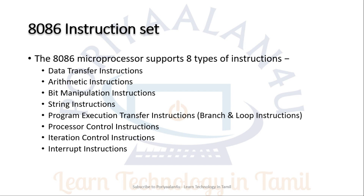These are the instruction sets that the 8086 can address. In 8086, there are several types of instruction sets: Data Transfer, Arithmetic, Bit Manipulation, String Manipulation, Program Execution Transfer, Processor Control, Iteration Control, and Interrupt Instructions. Compared to 8085, 8086 has major additions including string instructions, iteration control for looping programming, and more advanced instructions for bit manipulation and processor control.